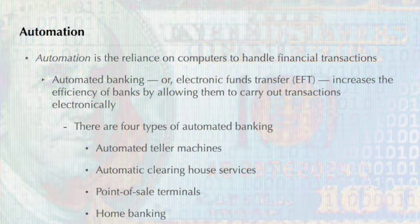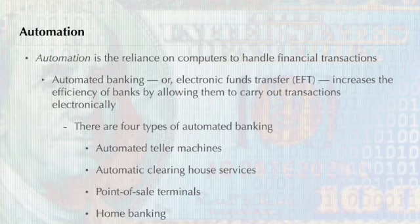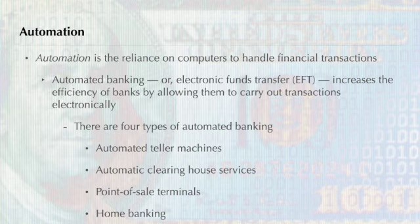Three main trends have influenced financial institutions in recent years. The first trend is automation, which means reliance on computers to handle transactions — also called electronic funds transfer, or EFT. Automated banking increases banks' efficiency by allowing them to execute banking transactions electronically. The process allows transactions to affect accounts immediately and saves banks money by decreasing the number of workers needed. The four main types of automated banking are automated teller machines, automatic clearinghouse services, point-of-sale terminals, and home banking.